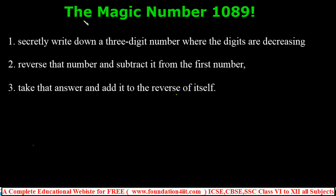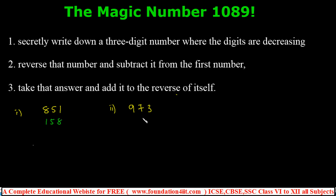Now the magic number 1089. By following three steps, let me show how it works. Step 1: ask students to secretly write any three-digit number where the digits are in decreasing order. For example, 851 or 973. Step 2: reverse the number and subtract it from the first. For 851, the reverse is 158; for 973, the reverse is 379.